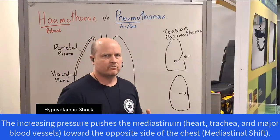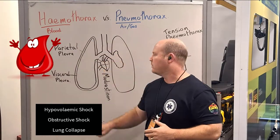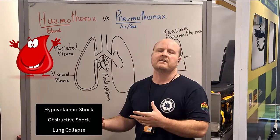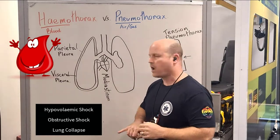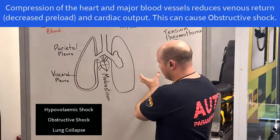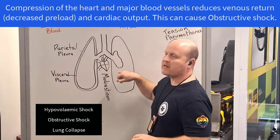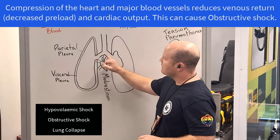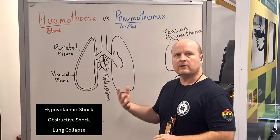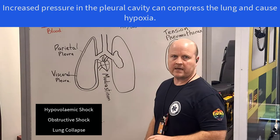How can these things be life-threatening? If it's a haemothorax, we can have hypovolemic shock — if it's a big enough bleed, we can lose enough blood to put us into hypovolemic shock. We can also have obstructive shock. If we've got this pressure pushing over, it's going to obstruct the filling of the heart and obstruct the blood flow through those great vessels. And also, we're going to get a lung collapse, which is going to affect our oxygenation.